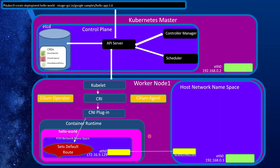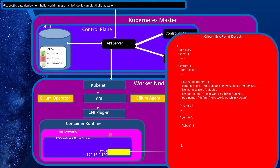The container runtime then informs the Cilium agent that the pod was created, and Cilium starts working on creating what is known as an endpoint object. Whenever a pod is created, Cilium also creates its counterpart — the endpoint object — which is a virtual definition of that pod. It has many attributes. It also has what is called an ID — don't confuse this ID with the identity we talked about earlier. This is a random number generated for each endpoint, and when the pod is recreated, this will also change.